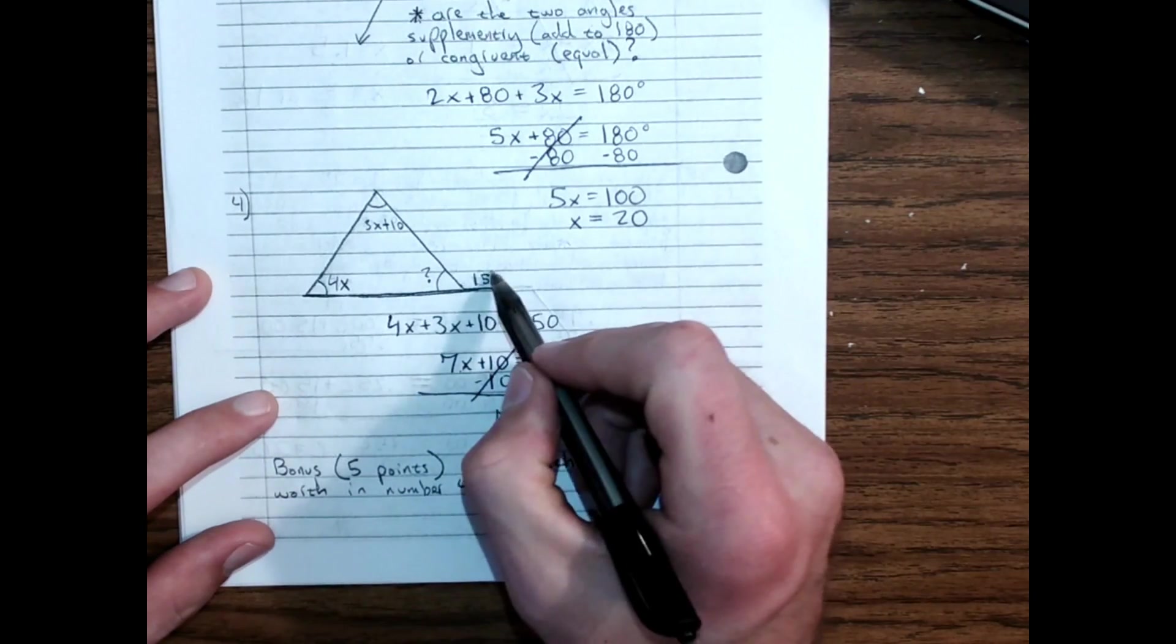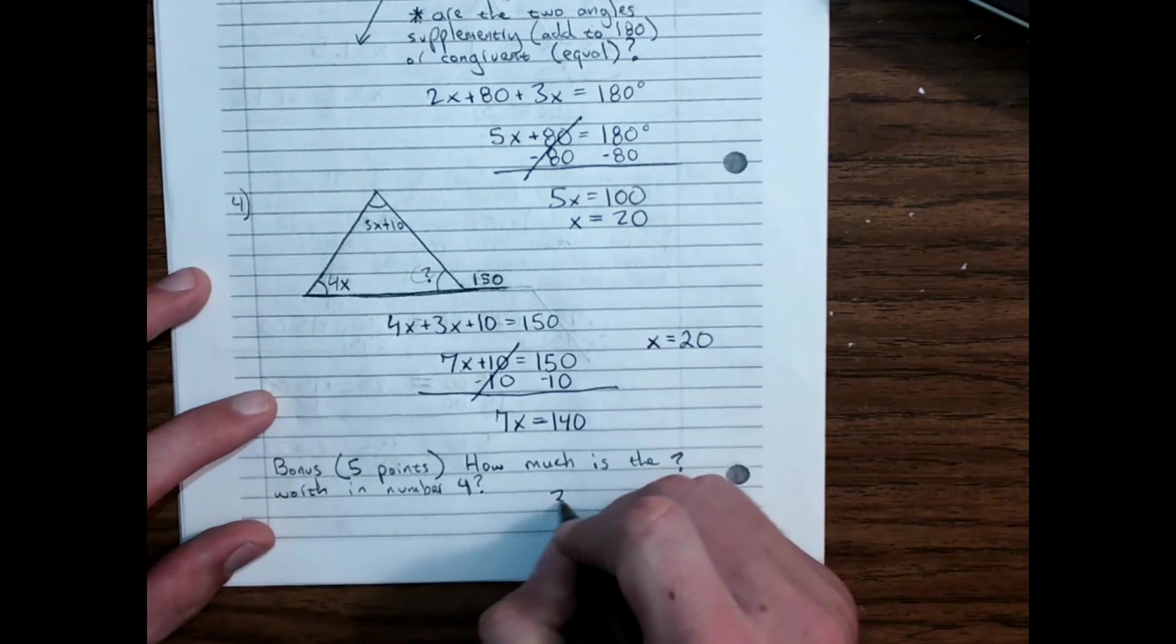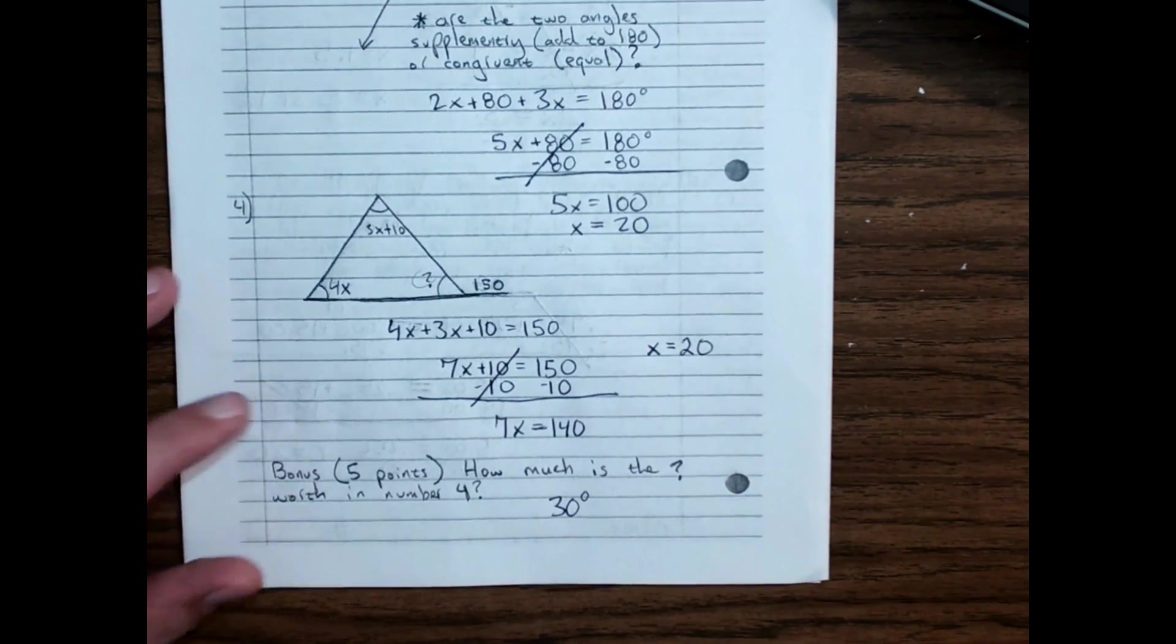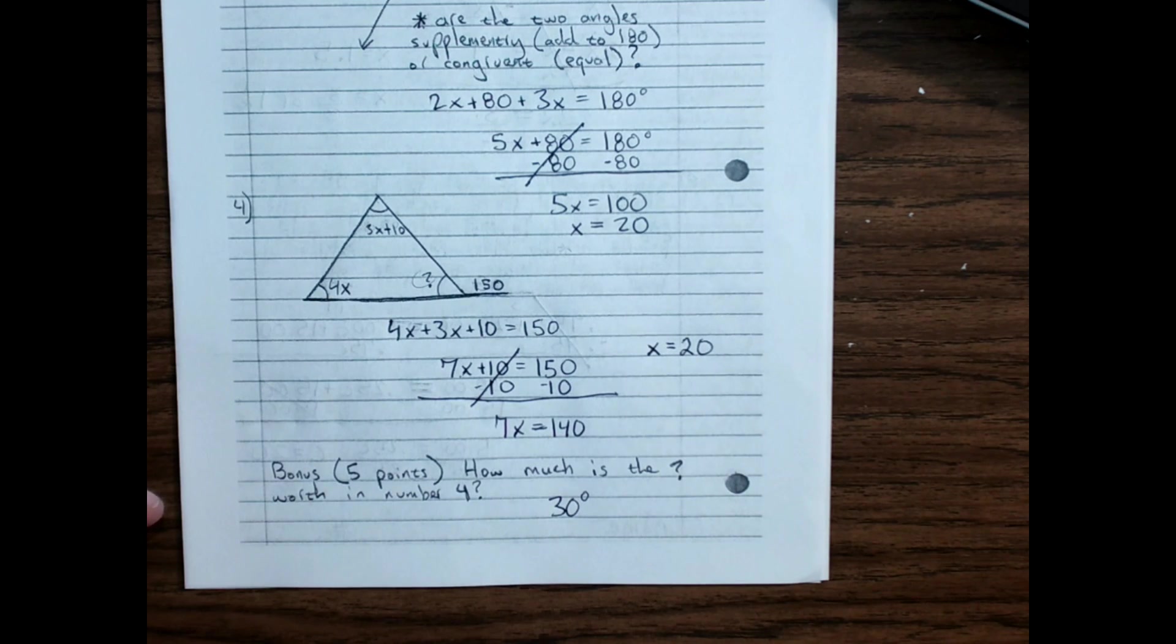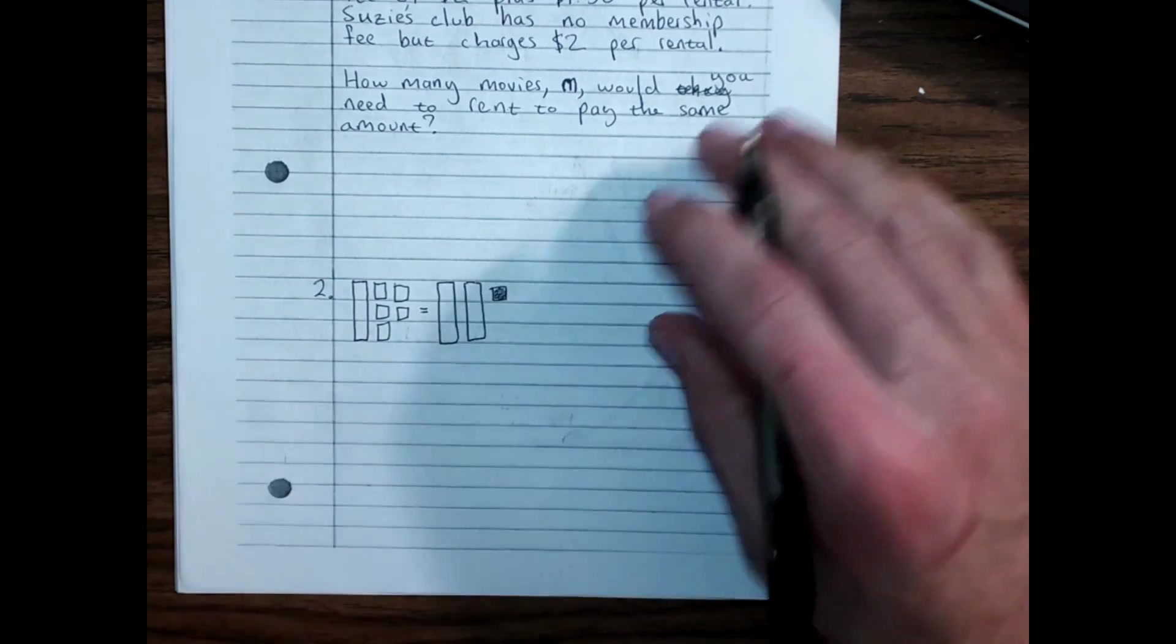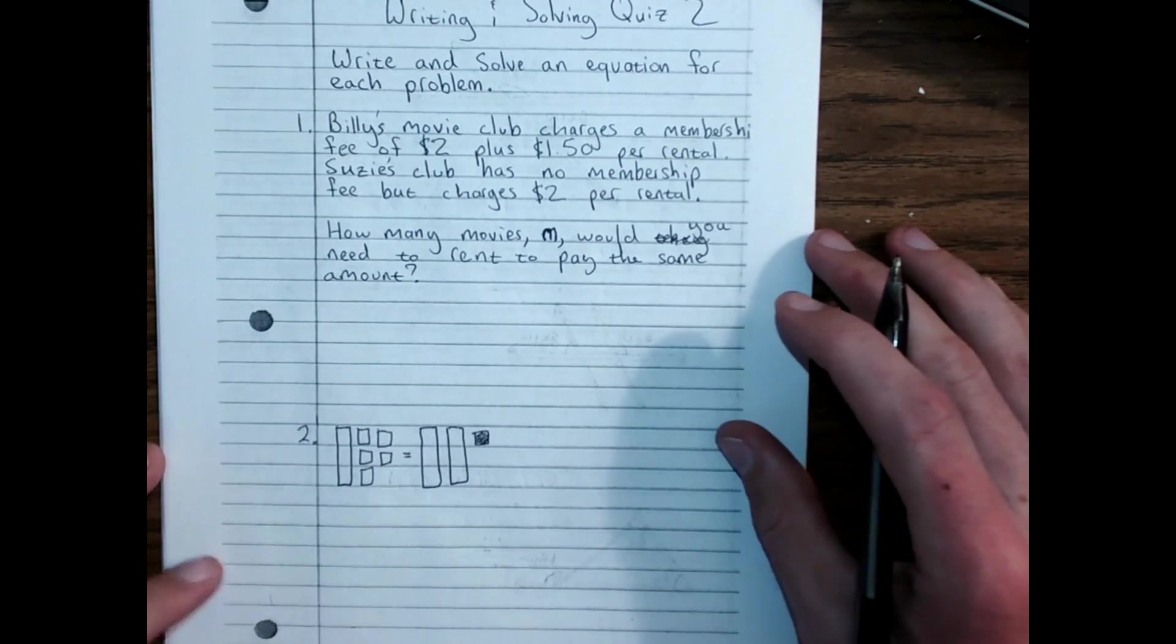Now, if this is 150, this question mark has got to be 30 degrees because it makes a straight angle. A straight line, the angles will always add to 180 degrees. So that's the quiz from the sub day.